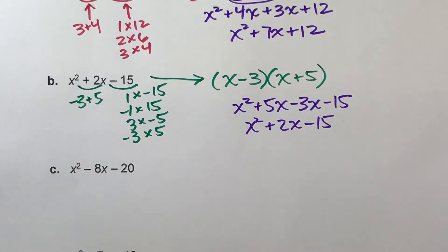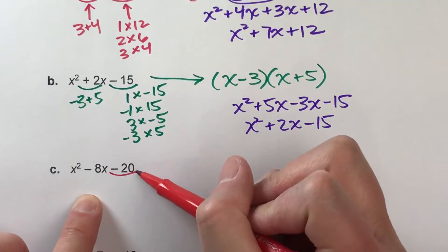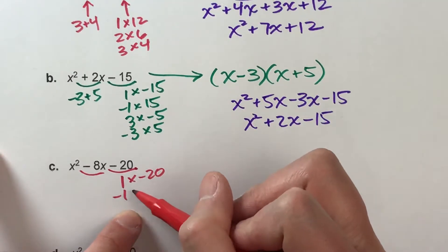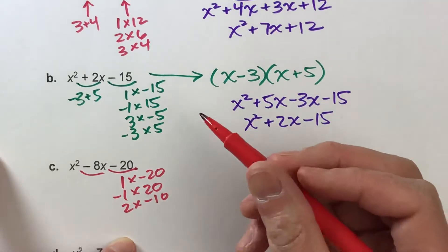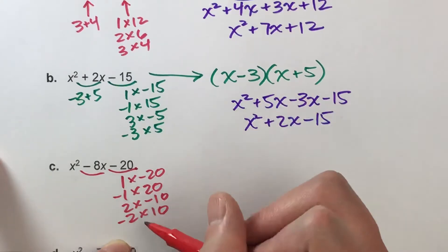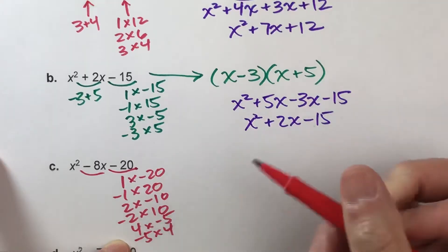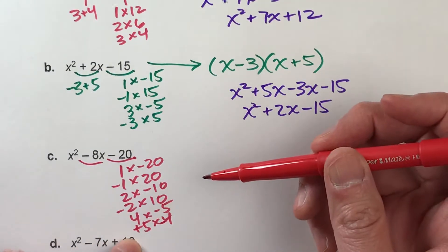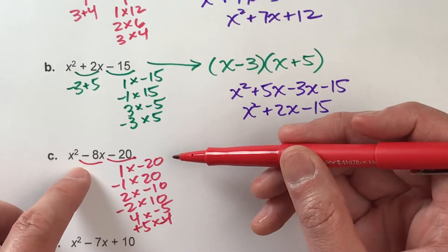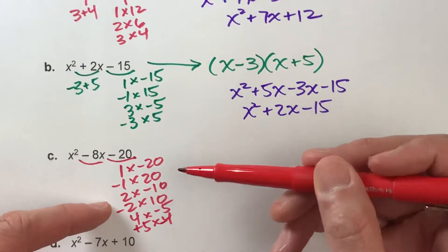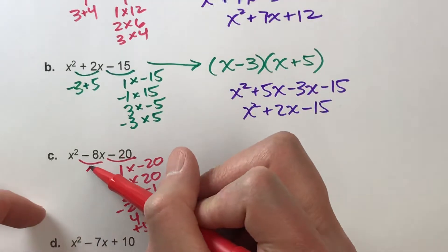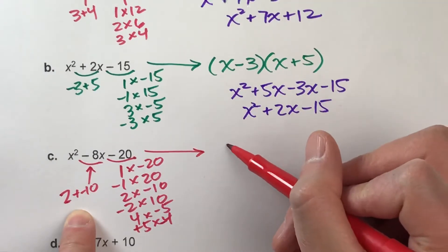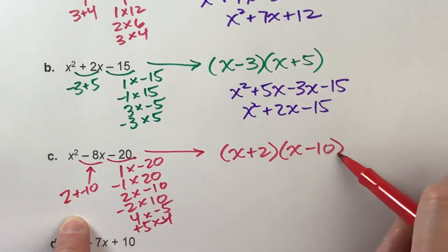Let's do another one with a lot of negatives: x squared minus 8x minus 20. We need two numbers that multiply to get negative 20 but add to get negative 8. Listing factor pairs: 1 and negative 20, negative 1 and positive 20, 2 and negative 10, negative 2 and positive 10, 4 and negative 5, positive 5 and negative 4. Checking which pair adds to negative 8 — 2 plus negative 10 gives negative 8. So the factored form is x plus 2 times x minus 10.